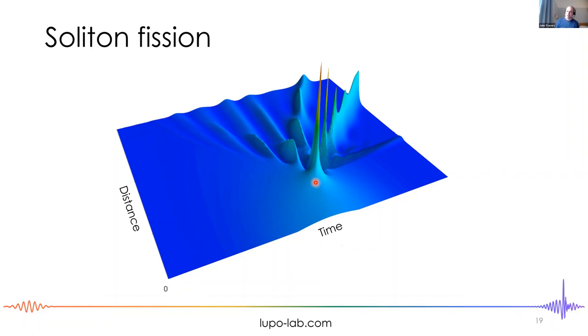Including higher-order terms: starting with a shortish pulse, it compresses dramatically to a spike, then undergoes soliton fission and breaks up into multiple structures. This happens in real systems. The initial self-compression gives rise to our extremely short pulses — this is how we generate one-femtosecond pulses — and the breakup gives rise to deep and vacuum ultraviolet generation.